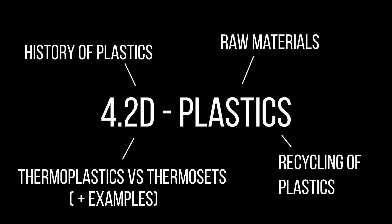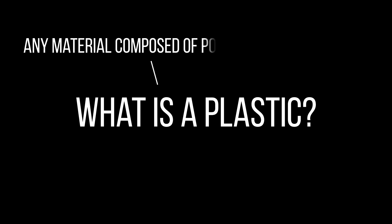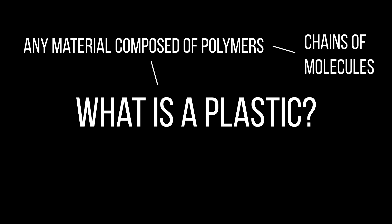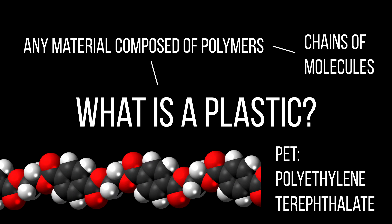And finally, the recycling processes that can be used with plastics. A plastic is any material that is composed of polymers, which are chains of molecules. For example, here is the atomic structure of a common plastic, PET, known as polyethylene terephthalate, which you can see here is made of a repeating chain of molecules.